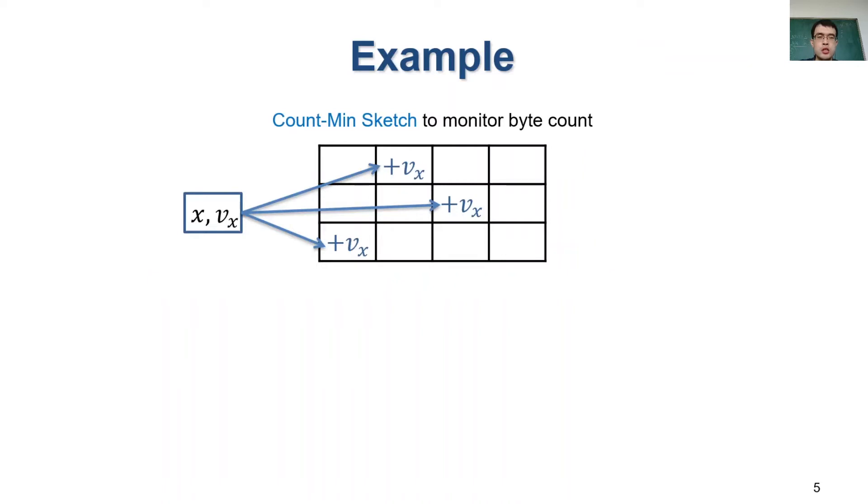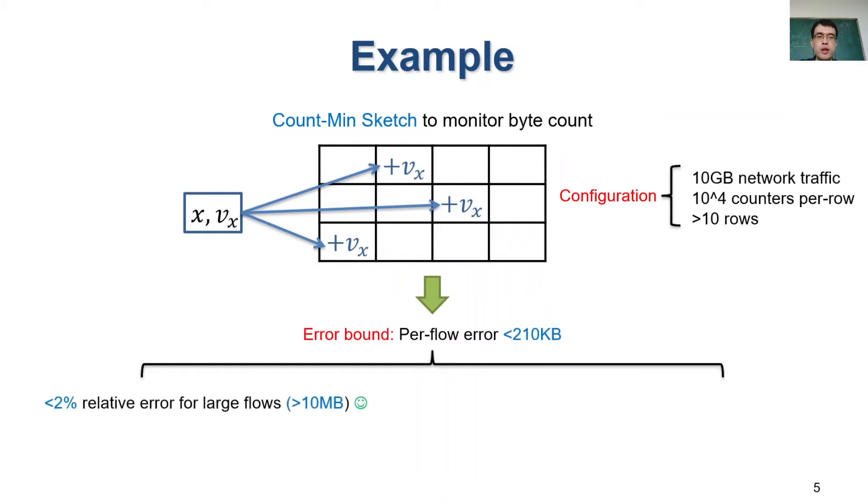Here we take a classical sketch algorithm, Count-Min Sketch, as an example. Count-Min Sketch consists of multiple rows of counters. It is usually used to monitor the total bytes of each flow. Now we consider a scenario with 10GB network traffic, and if we deploy a Count-Min Sketch with enough rows and each row has 10,000 counters. In theory, we can guarantee that the estimated flow size of any flow deviates from its true size by around 200KB. For heavy hitters whose size is usually tens of megabytes, this absolute error means the relative error is less than 2%, which is good.